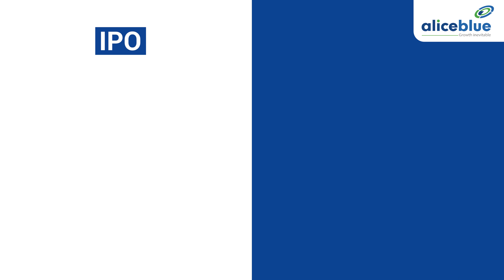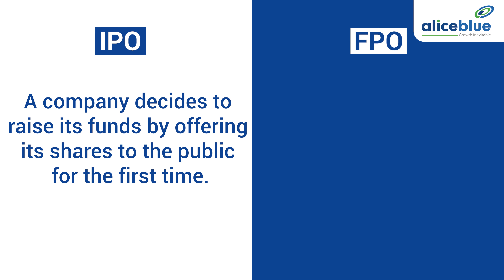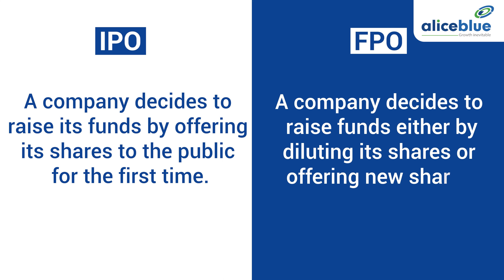Now, what is the main difference between IPO and FPO? In an IPO, a company decides to raise its funds by offering its shares to the public for the first time. On the other hand, in an FPO, a company decides to raise funds either by diluting its shares or offering new shares after the IPO. Usually in FPO, the company issues shares at a lower price compared to the market price to get more subscribers.